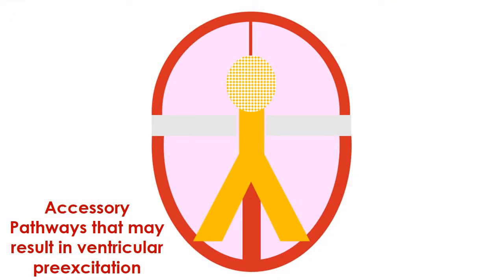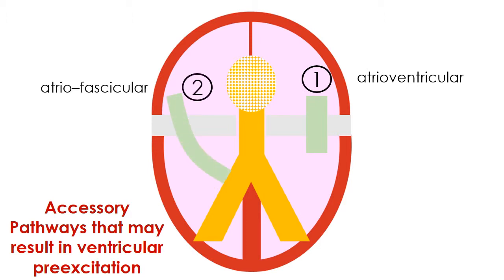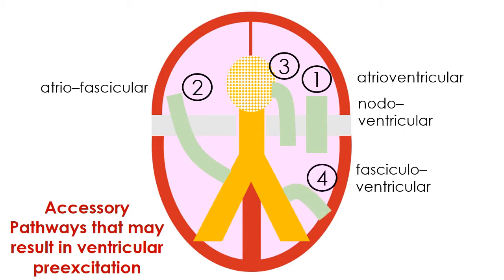Accessory pathways that may result in ventricular pre-excitation are: first, the atrioventricular accessory pathways; second, the atrio-fascicular pathways; third, the nodo-ventricular accessory pathways; and finally, the so-called fasciculo-ventricular accessory pathways.